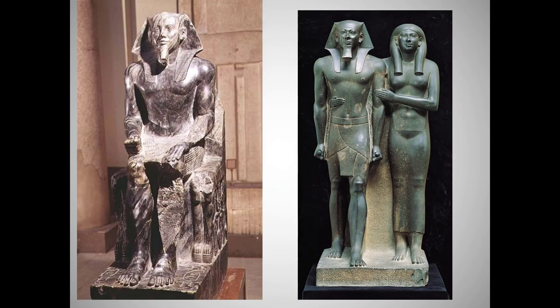The Khafre statue was carved from diorite, a very hard igneous rock — even harder than greywacke, the dark gray sandstone used for the required statue of Menkaure and Queen on the right. These hard stones were much more difficult to carve, but also more likely to endure, reflecting again the Egyptian focus on the eternal.